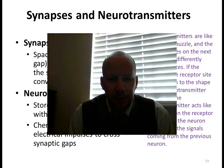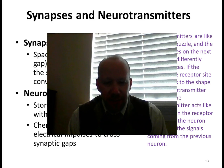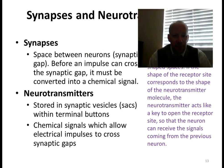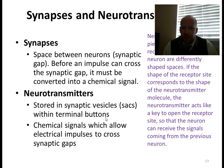We're back talking more about chapter two — the brain. We're going to talk about neurotransmitters and the communication process of the brain. Looking at synapses — the gap between neurons — before an impulse can cross the synaptic gap it must be converted into a chemical signal.